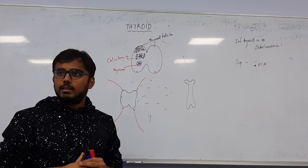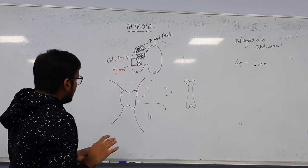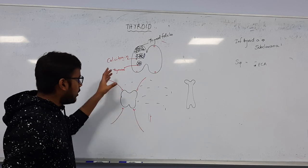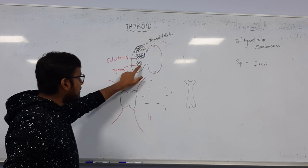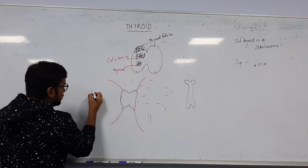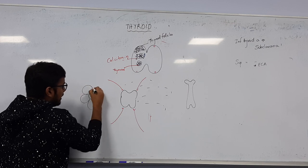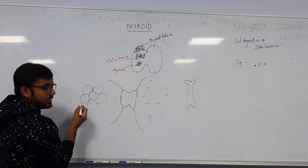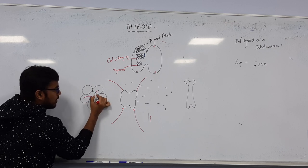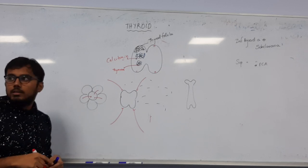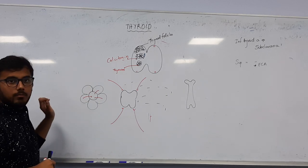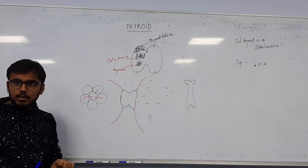Do not think that superior and inferior thyroid arteries come from the same branch - they do not. The synthesis of thyroid hormone happens within the follicles. To explain this, I will draw one artery, one follicle with its lumen and follicular cells, and explain the synthesis of thyroid hormone step by step.